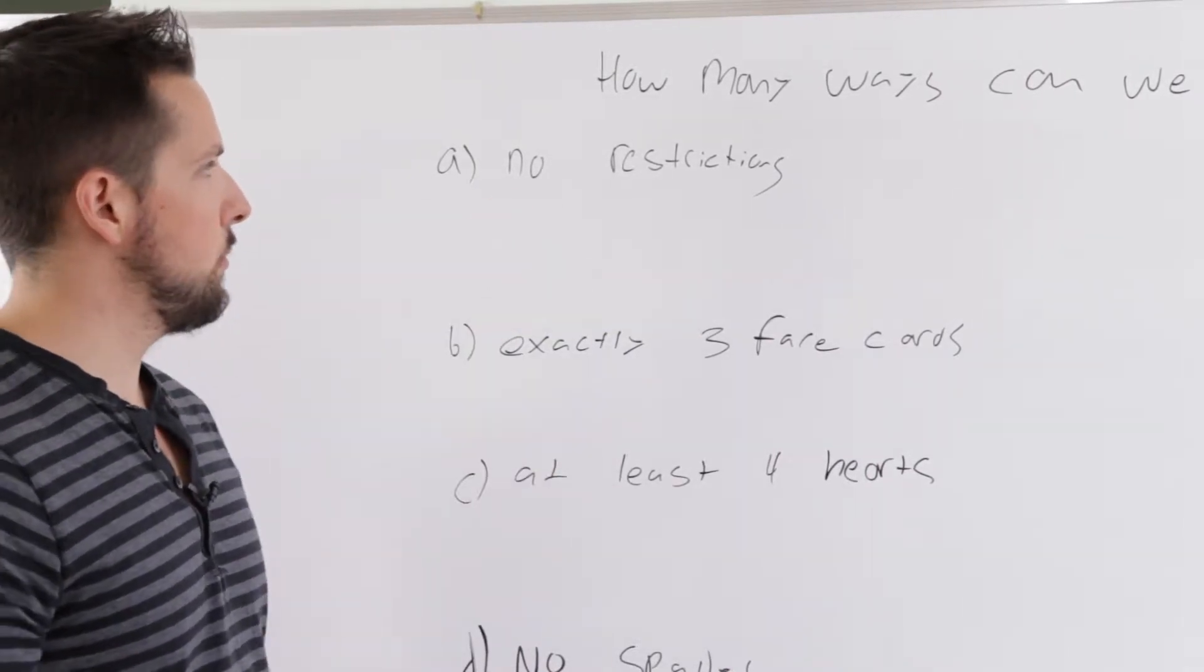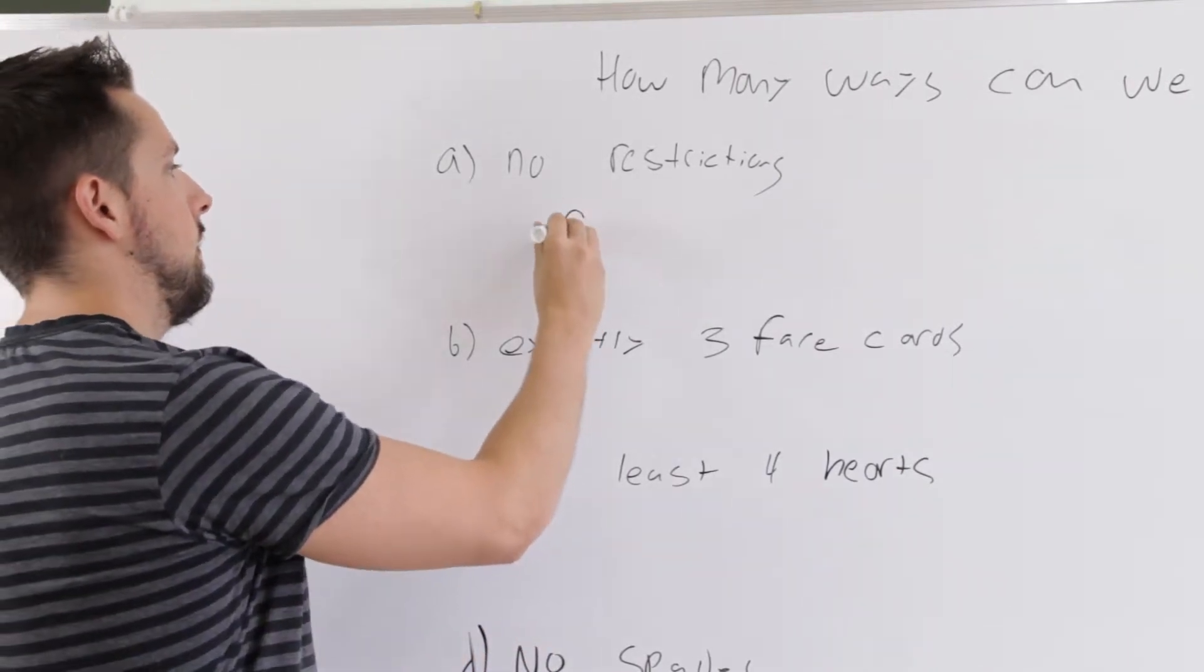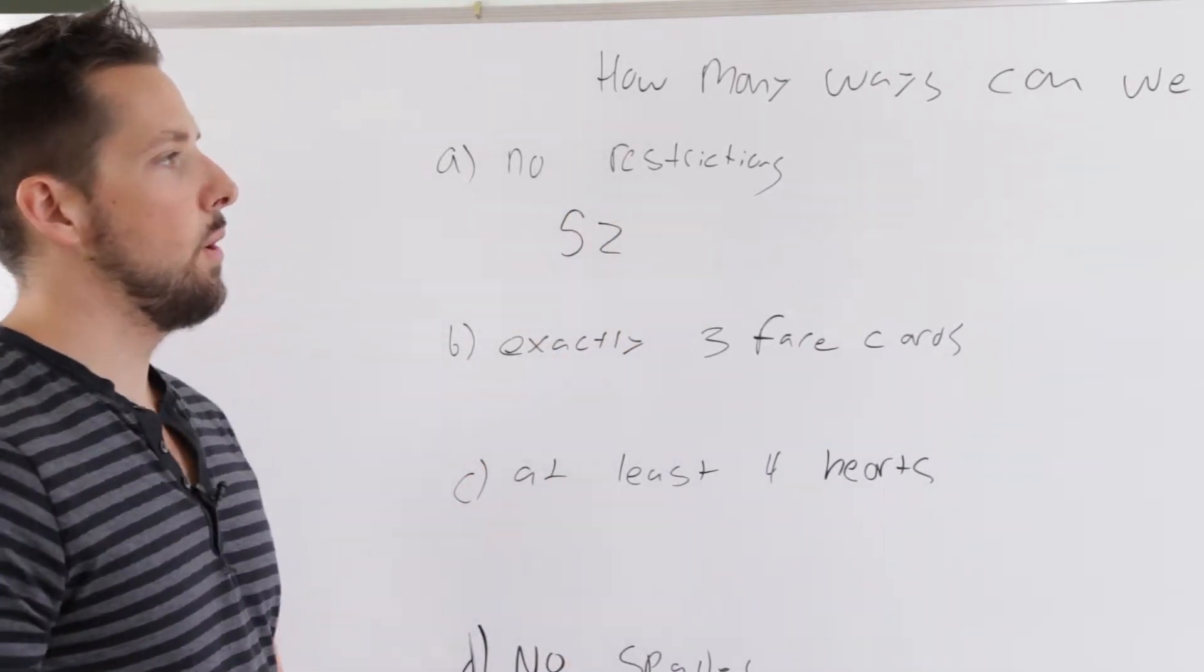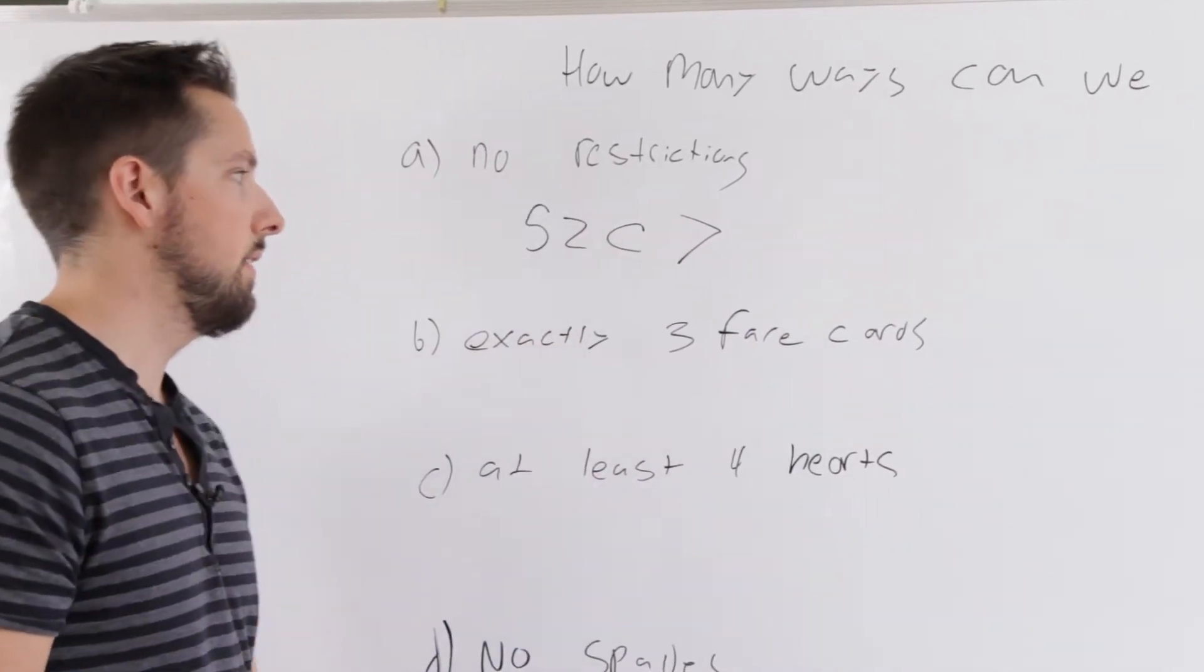So for the first one, no restrictions. Well, how many cards are there total? 52 in a deck. What are we choosing? Seven. So the answer is 52 choose seven. Pretty easy.